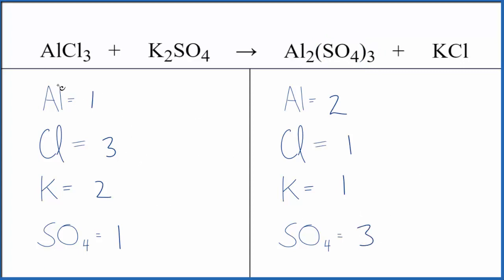We can start by balancing the aluminums. Put a two in front of the AlCl3—one times two gives us two aluminums. Two times three gives us six chlorine atoms.